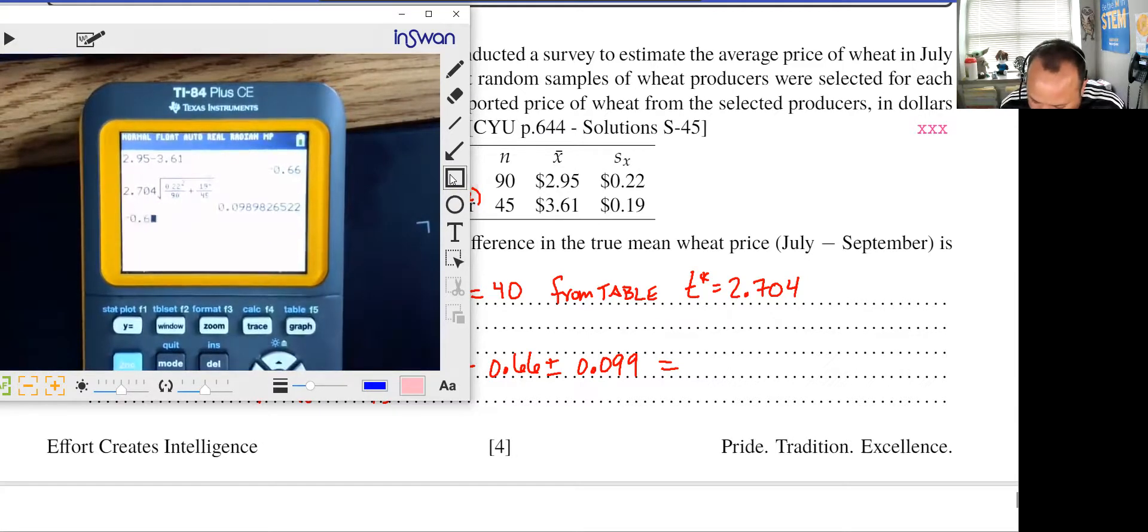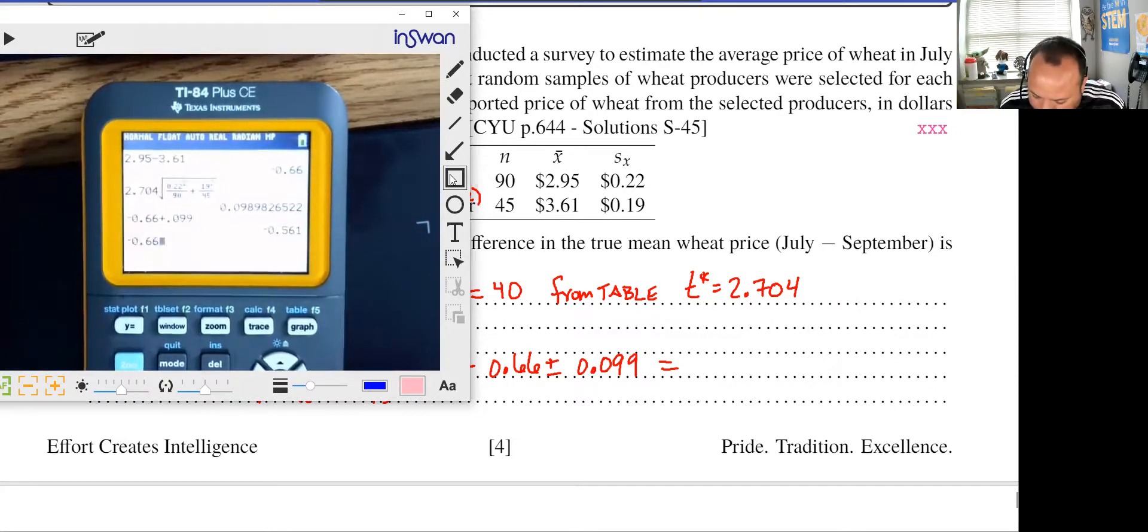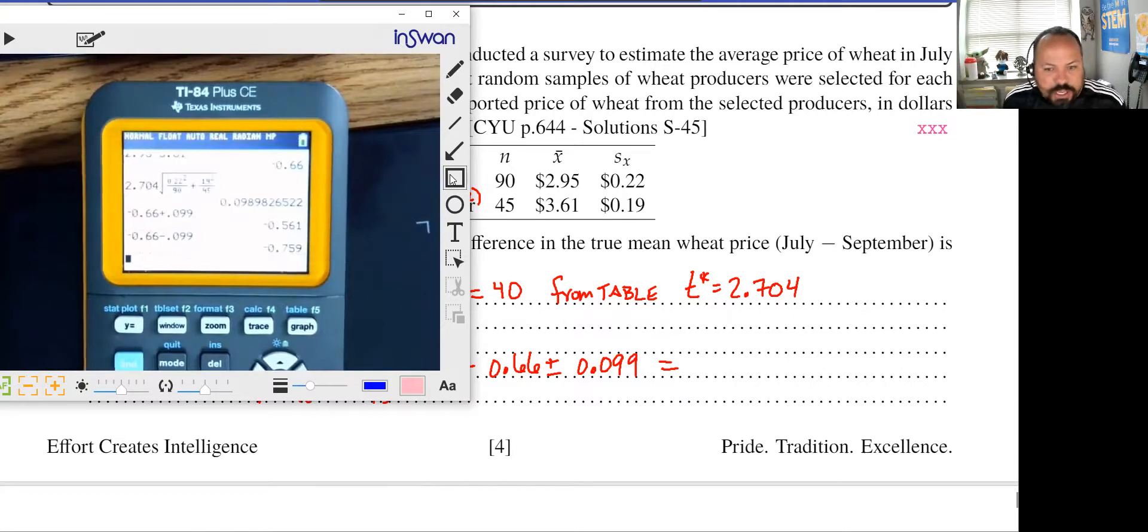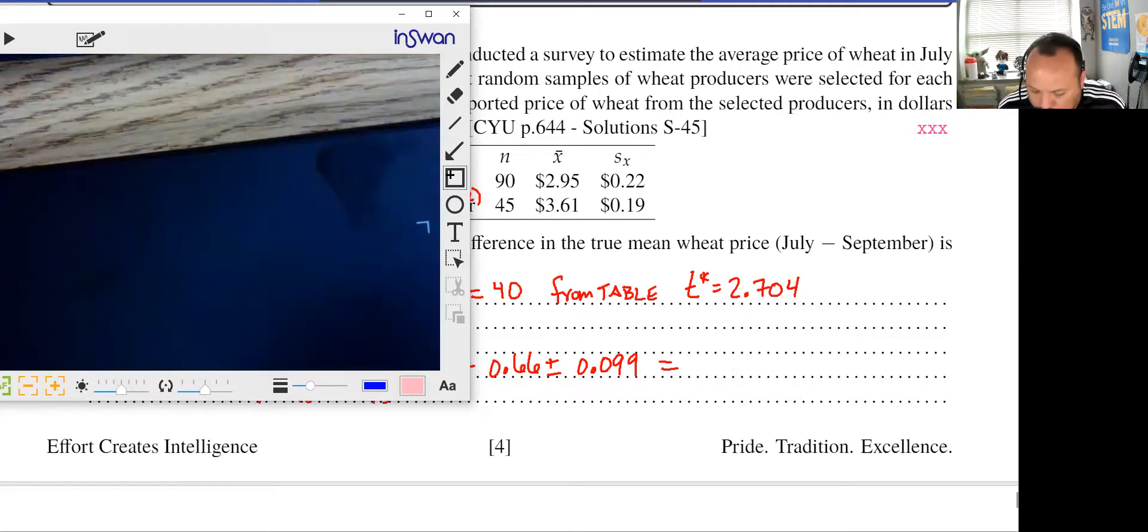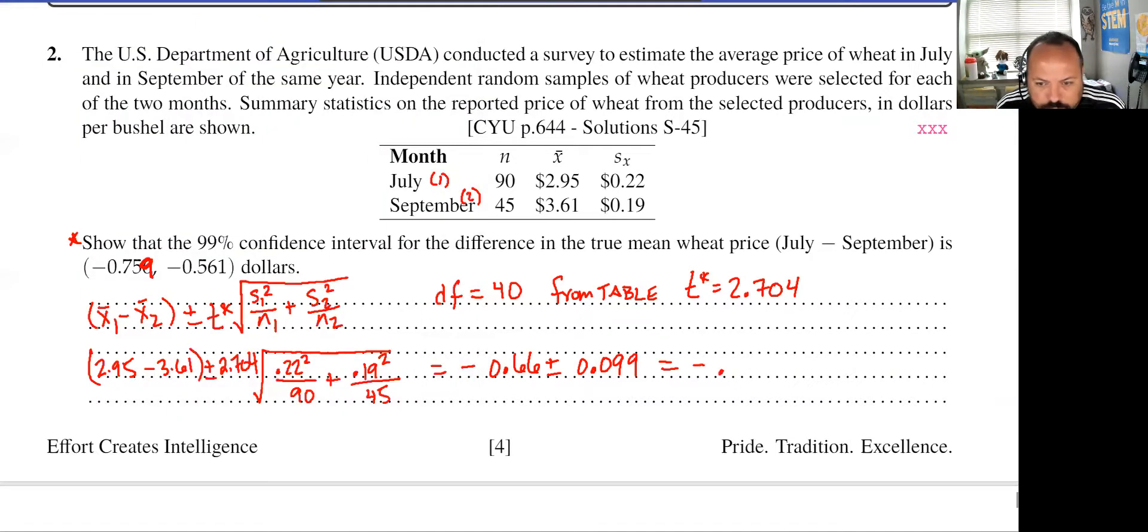and so we might come over and just check that out. We'll say, what is negative 0.66 plus 0.099? And what is negative 0.66 minus 0.099? And so there I see that negative 0.759 is my left most value of the interval and negative 0.561 is my right most value of the interval. And that's what I was asked to show. So I have negative 0.759 all the way to negative 0.561.